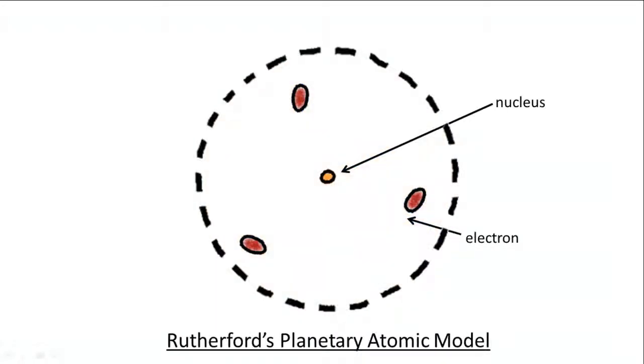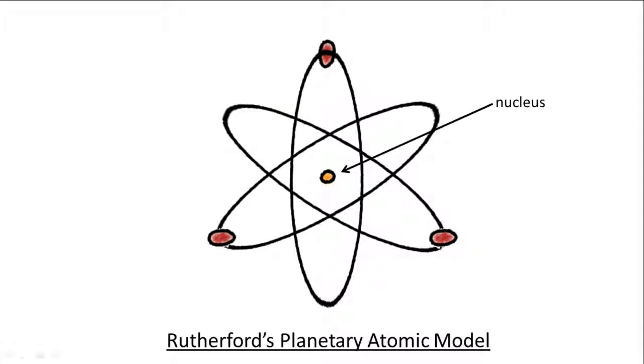An atom is mainly empty space except for the tiny but massive nucleus at the center. What about the raisins? You mean the electrons. Rutherford imagined them to be orbiting the nucleus.